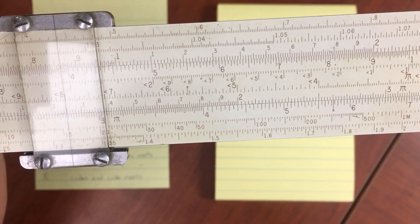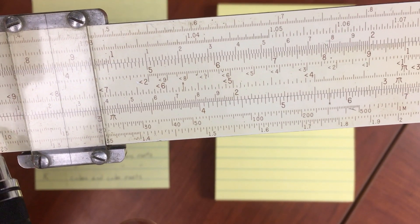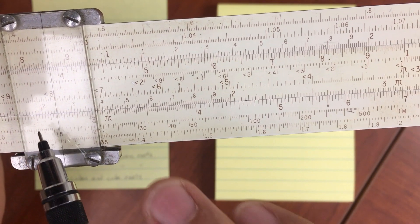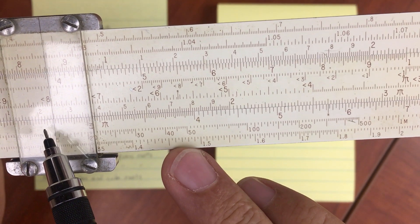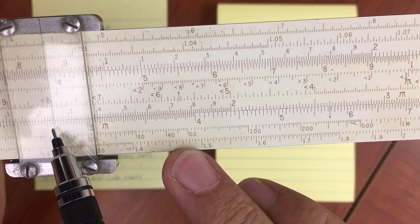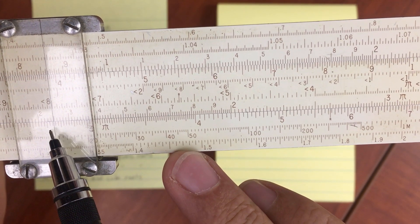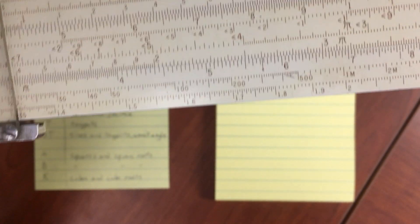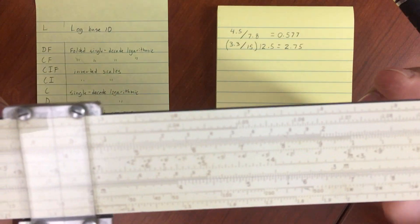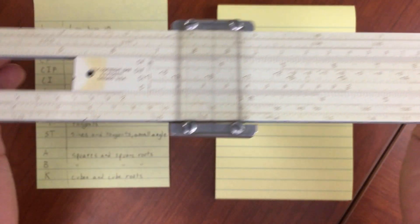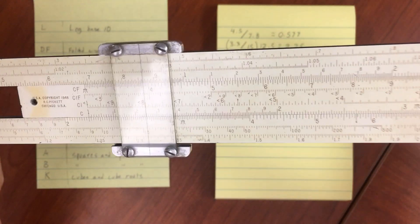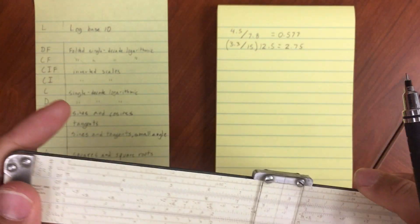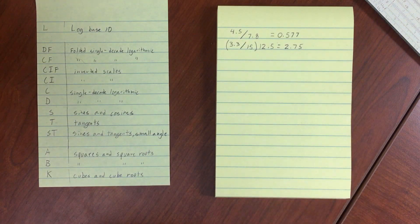And my final answer is going to be 2.1, 2, 3, 4, 5, 6, 7, and then right about in the middle. So probably about 2.75 or so. And that's exactly what it is. So we got pretty close on that one.